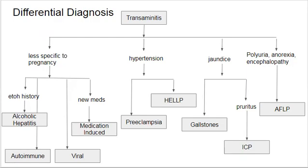If the patient has an alcohol history, we can think about alcoholic hepatitis, autoimmune or viral hepatitis. It's also important to think about medication-induced hepatitis, especially since acetaminophen is a go-to analgesic in pregnancy. If a patient has been in a lot of pain and taking a lot of Tylenol, we can certainly think about that as an etiology. Various herbal supplements like Kava Kava or Germander are more commonly taken in pregnancy and can cause hepatitis.